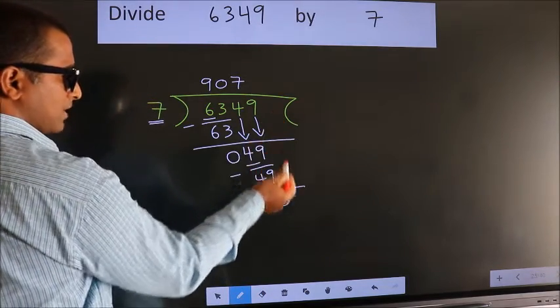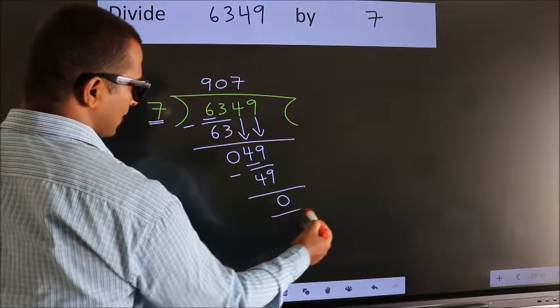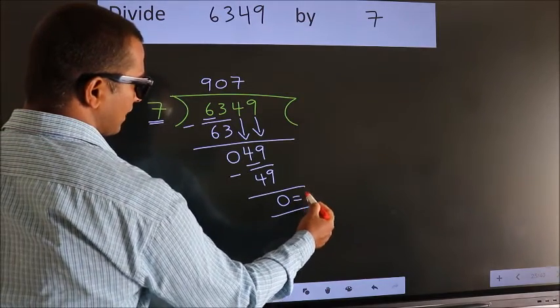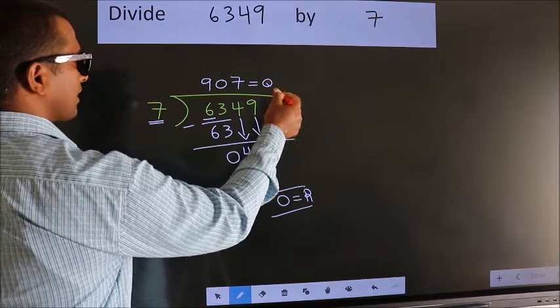No more numbers to bring it down, so we stop here. This is our remainder. This is our quotient. Now we get 907.